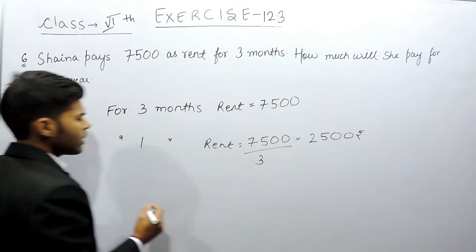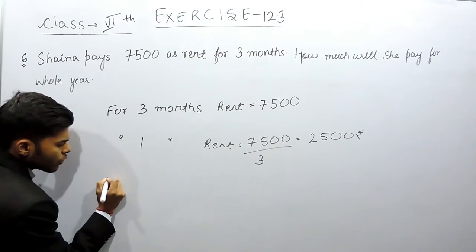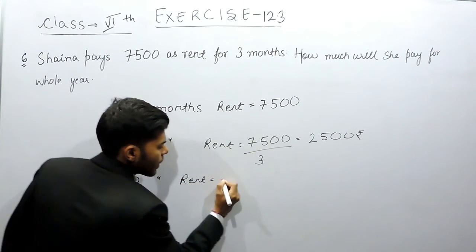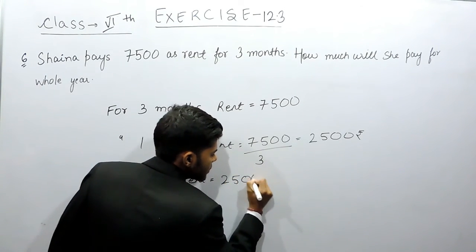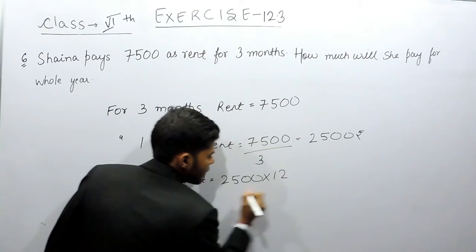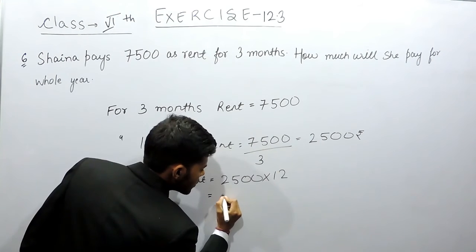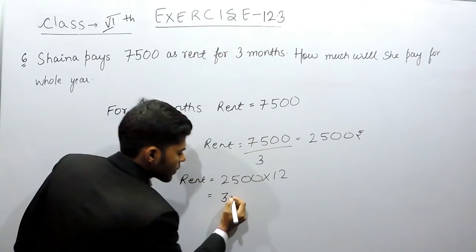For 1 month, it is 2500. So for 12 months, rent will be equals to 2500 multiplied by 12 and that will be equals to 25 into 12 is 300